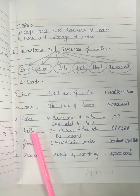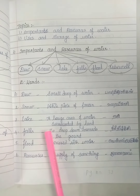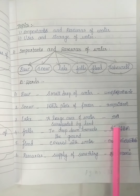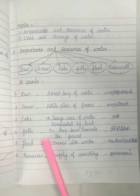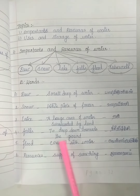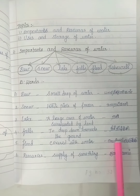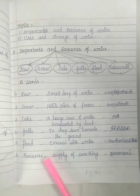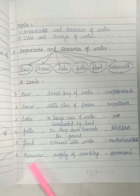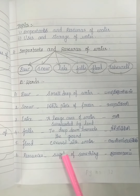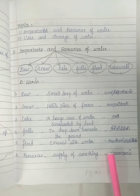Fourth, falls — to drop down towards the ground. Fifth, flood — covered with water. In Tamil: Vellapiruku. Sixth, resources — supply of something. In Tamil: Tunaivalam. Excellent.